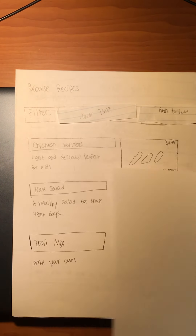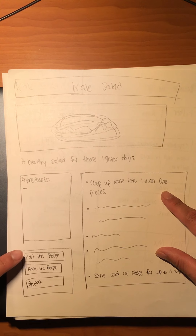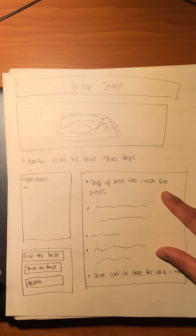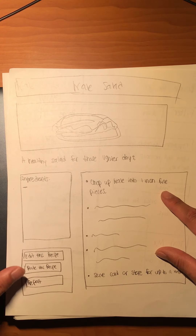If they select the kale salad, they'll be greeted with the kale salad recipe page, which includes the title, a picture, a description, the ingredients, and the instructions. From there, the user can choose to edit the recipe, rate it, or report it.